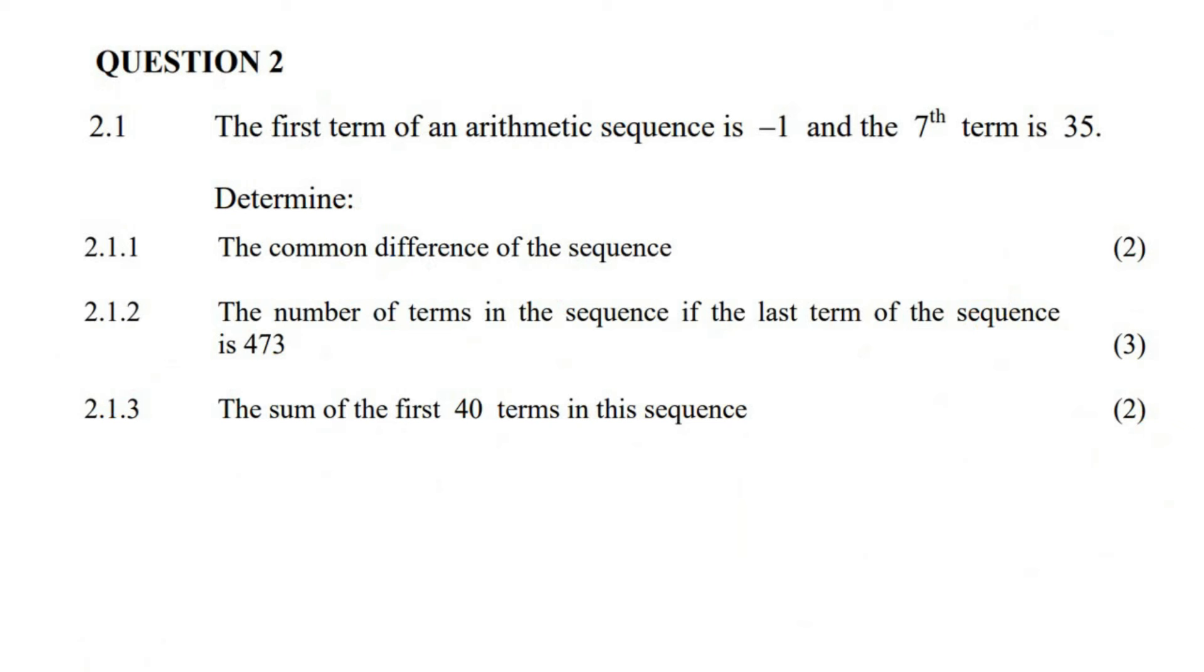The first term of an arithmetic sequence is negative 1, and the seventh term is 35. Determine the common difference. There are two ways that students like to do this question. With option 1, we'll use some type of simultaneous approach.